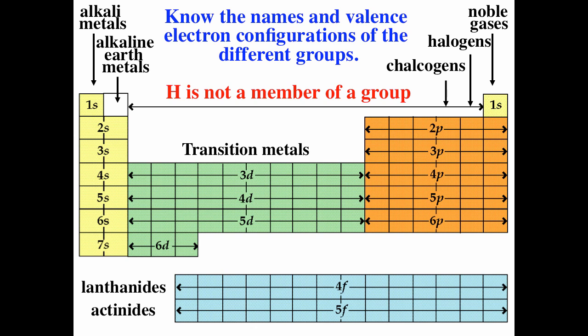You should know the names and the valence electron configurations of the different groups. The number of valence electrons equals the column number, excluding the transition metals. Please remember that hydrogen is not a member of any group — it is often placed above the alkali metals but is not an alkali metal. Sometimes hydrogen is placed near fluorine because it can form a minus one charge, but hydrogen is a non-metal and not a member of any group.